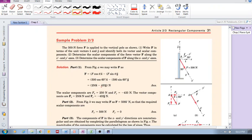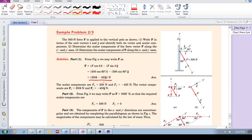Okay, so there we go. That's straightforward. Pretty straightforward. The scalar components are 250 and minus 433. And the vector components, you need to include that i, that unit vector, j, i and j.